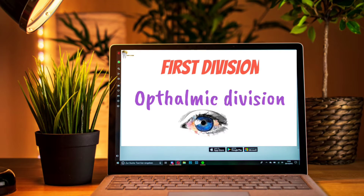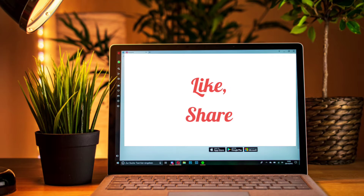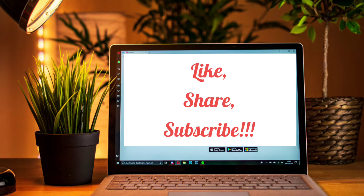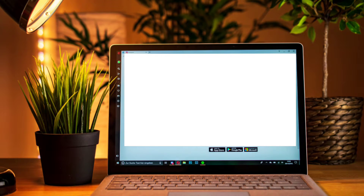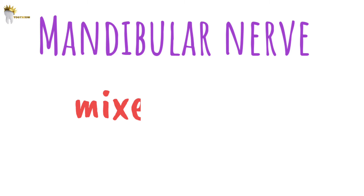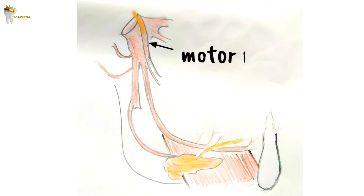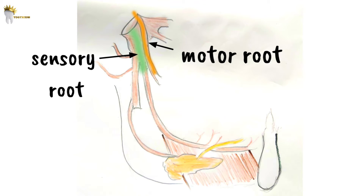We have seen the first two divisions of the trigeminal nerve in the previous videos. Today we are going to understand the course of the third division of the trigeminal nerve, the mandibular nerve. The mandibular nerve is a mixed nerve — it is a union of the small motor root and the large sensory root of the trigeminal nerve.